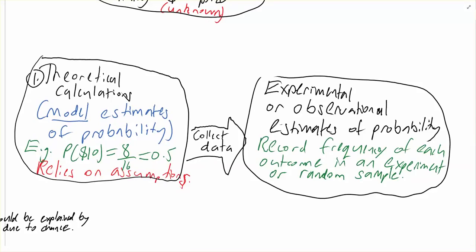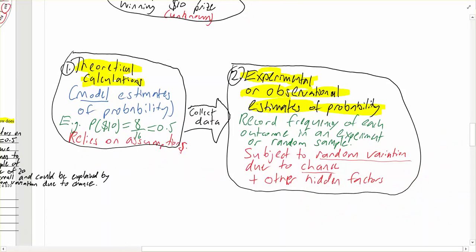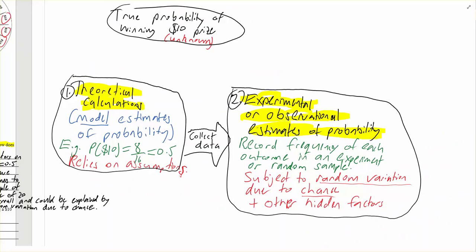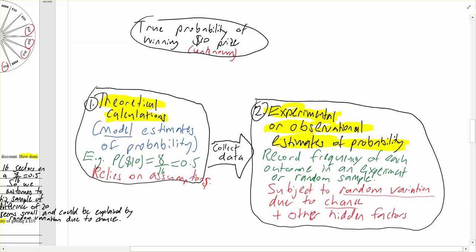And what's that subject to? Well, because the theoretical calculations were subject to assumptions, the experimental or observational estimates are subject to random variation due to chance, plus any other factors we haven't considered yet, like the way the wheel was spun. We've got the problem of trying to work out the true probability of something we can't know for sure. We start with theoretical calculations — what we think will happen based on our assumptions — then move to experimental or observational estimates, then compare. And sometimes in the real world that leads us to revise our original theoretical model, because we might find out more information we didn't already know.